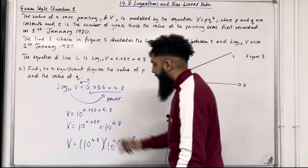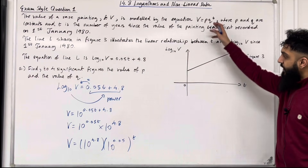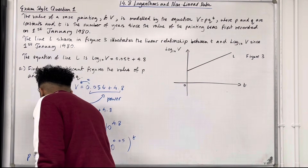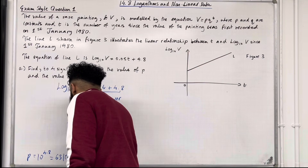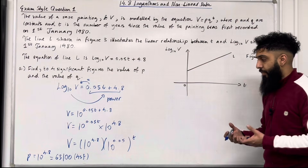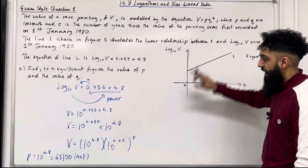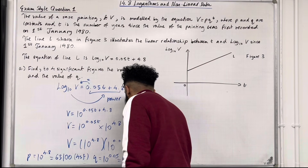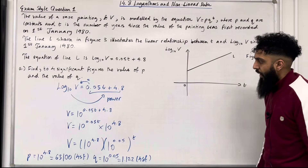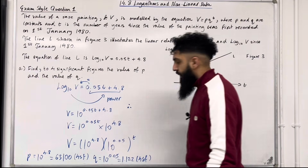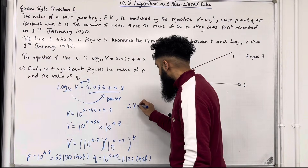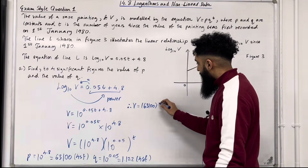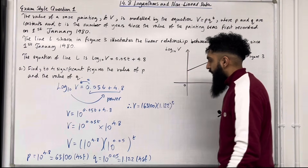From here, p equals 10 to the power 4.8, which equals 63,100 to 4 significant figures. And q equals 10 to the power 0.05, which equals 1.122 to 4 significant figures. Therefore, to 4 significant figures, my model is v equals 63,100 multiplied by 1.122 to the power t.